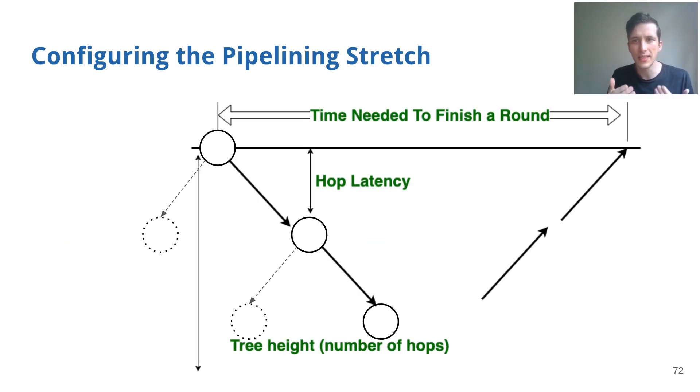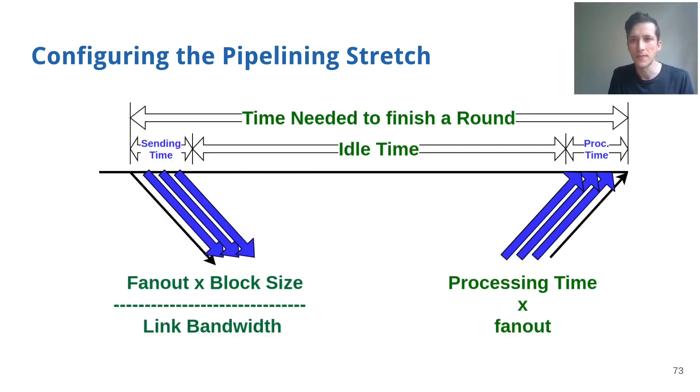Considering the total timeframe it takes to finish a round, which is mostly made up from the hop latency, depending on the depth of the tree and the number of hops in the tree, including the computation time at each step. We can calculate, then, a subset of this, which is the idle time, which in a nutshell is the total time, subtracting the sending time, which is the time it takes to propagate the block, which depends mostly on bandwidth, block size, and fanout, and the processing time.